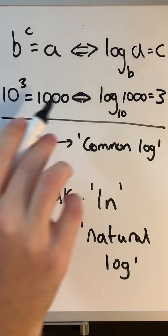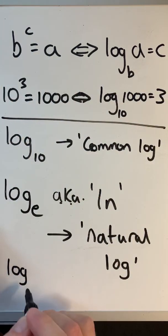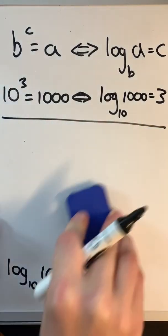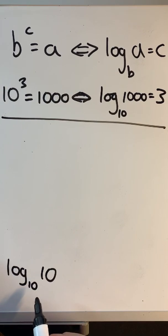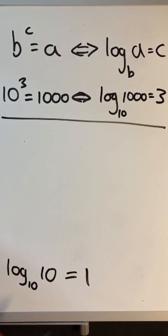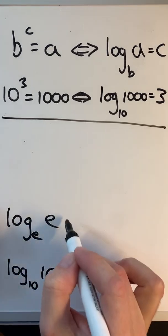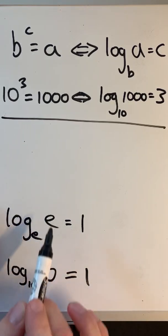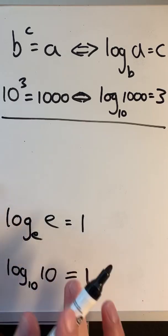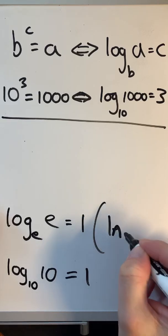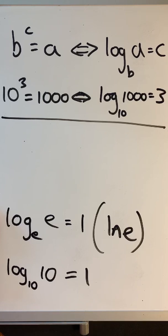Consider log to the base 10 of 10 — how many times do we have to multiply 10 by itself to get 10? Only once, so 10 to the power 1 equals 10, meaning log to the base 10 of 10 equals 1. The same relationship applies for log to the base e: log to the base e of e also equals 1. You could also write that as ln of e equals 1. This makes transposition of formulae involving Euler's constant a little bit easier.